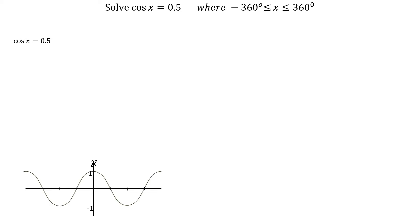To solve cos x equals 0.5, where x is between minus 360 and plus 360 degrees, we first take the inverse of cos of 0.5, getting 60 degrees.